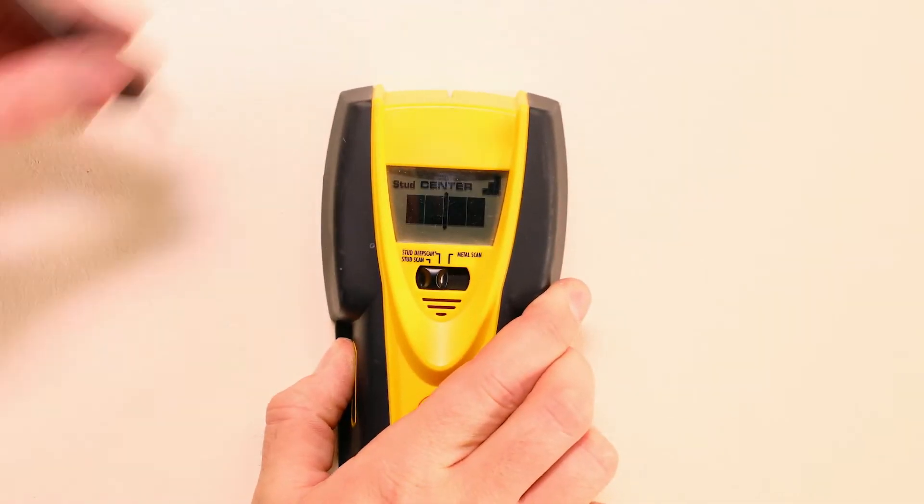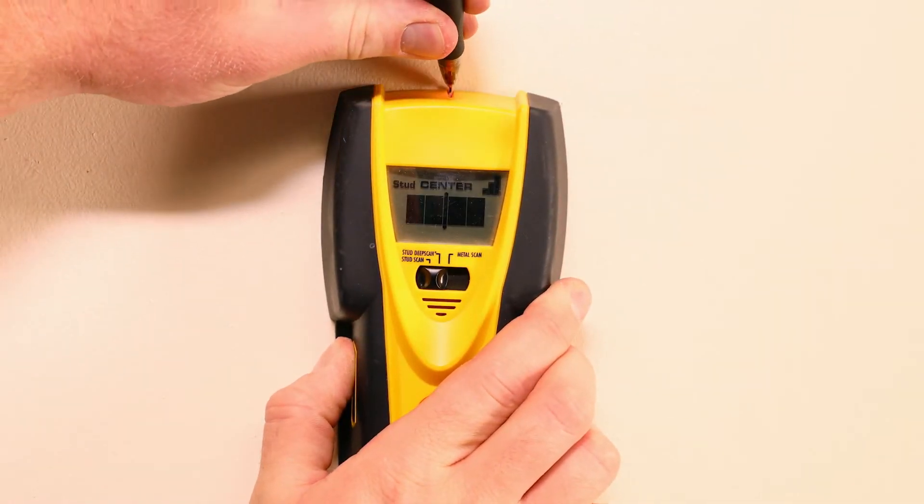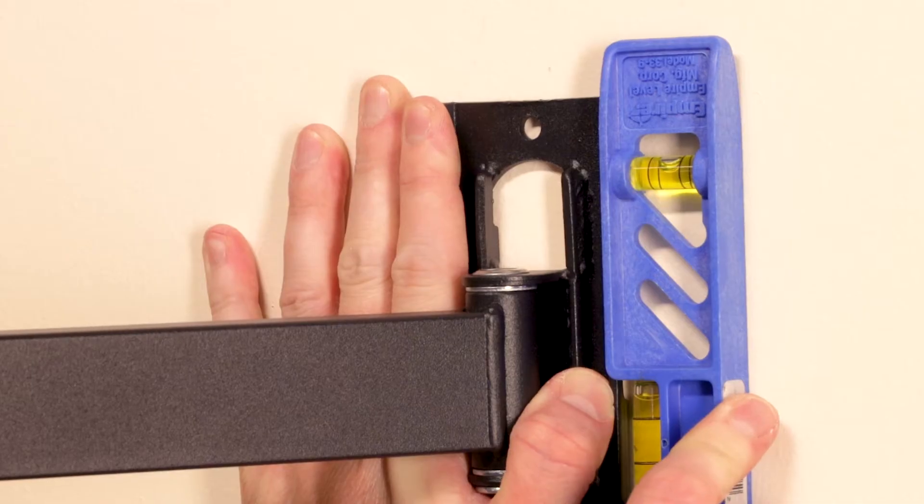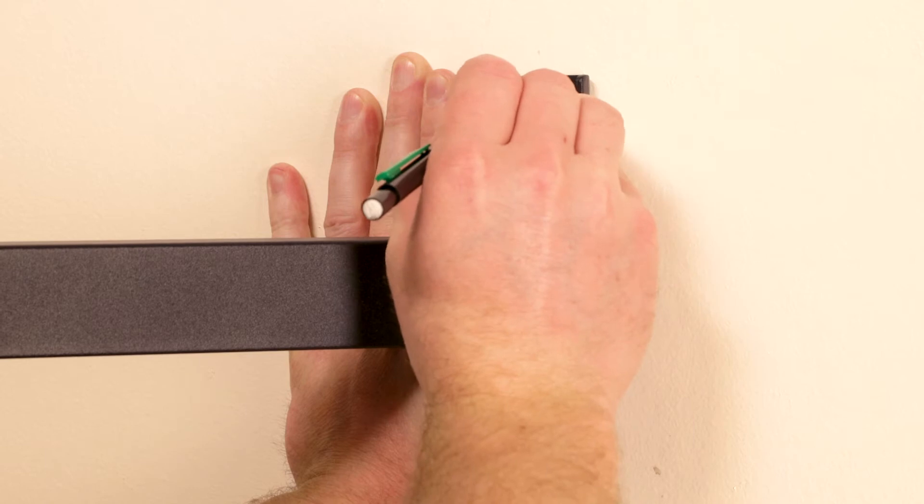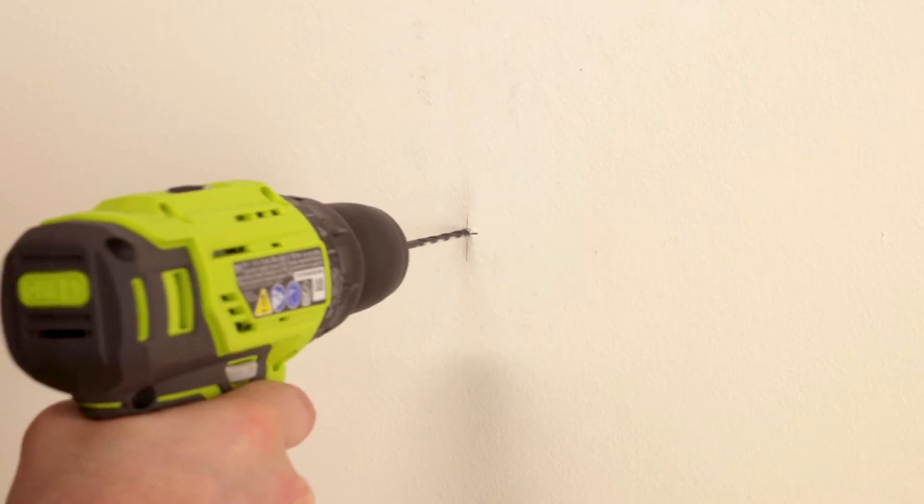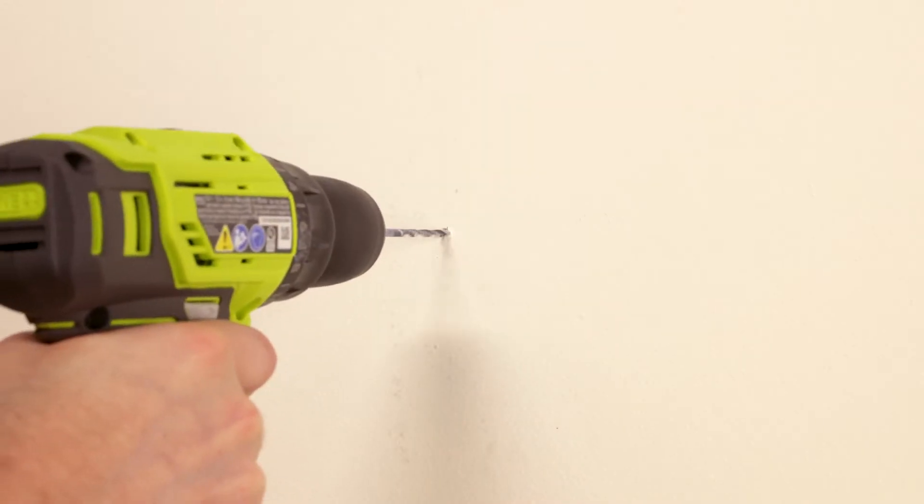If you're attaching the mount to drywall, locate a stud and mark the exact center. Hold the mount against the wall, make sure it's level, then mark locations centered on the stud. Drill a 1/8-inch pilot hole at each marked location.